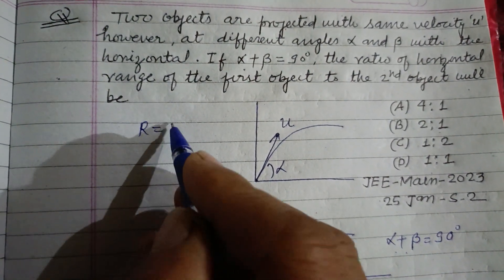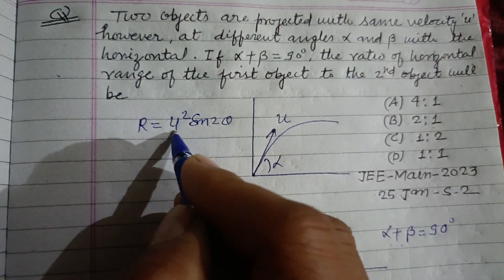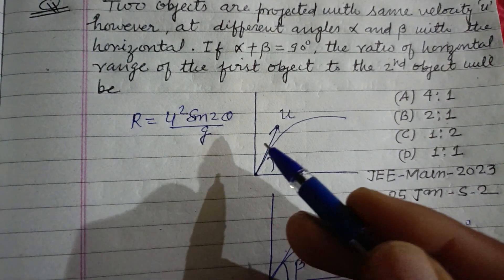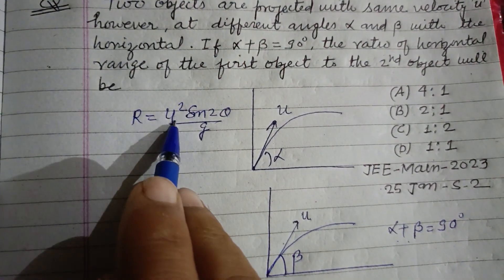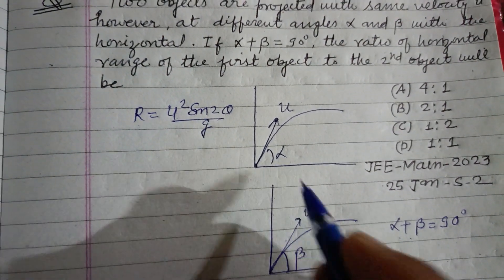First, R equals, you know that u squared sin 2 theta upon g. If an object is projected at angle theta from a point with velocity u, then R equals u squared sin 2 theta upon g.